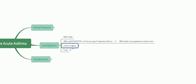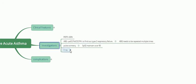Pulse oximetry is very important throughout the management of asthma. It is important to maintain oxygen saturation greater than 92%, and pulse oximetry gives us the SpO2 value. Most sources say SpO2 should be maintained above 92%.